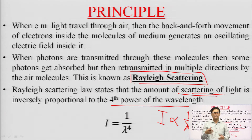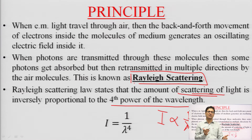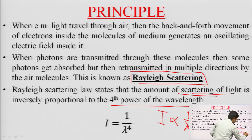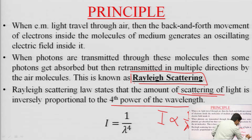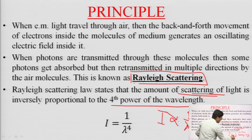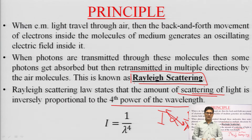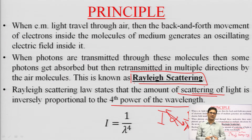For a particular wavelength value, the intensity of scattered light is inversely proportional to its 4th power. If wavelength is smaller, scattering will be large or high, because wavelength and scattering are inversely proportional to each other. Small wavelength light is generally scattered more, whereas long wavelength light is scattered less.